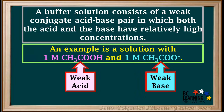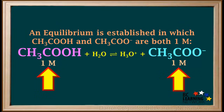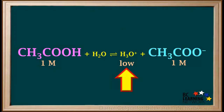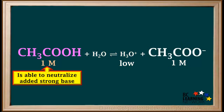An example is a solution that contains 1 molar ethanoic, or acetic acid, which is a weak acid, and 1 molar ethanoate, or acetate ion, which is a weak base. In this solution, an equilibrium is established in which the concentrations of acetic acid and the acetate ion are both 1 molar, and the hydronium ion concentration is quite low. The 1 molar acetic acid is available to neutralize small amounts of strong base that might be added to this solution.